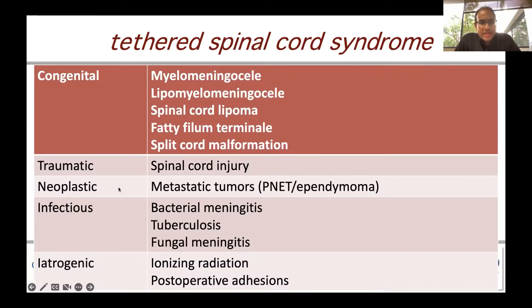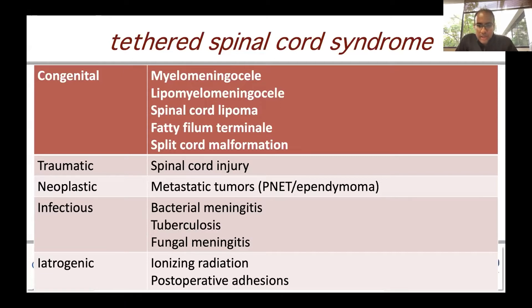Tethered spinal cord syndrome can occur in a congenital sense — in the setting of a myelomeningocele, a lipomyelomeningocele, a spinal cord lipoma, a fatty filum terminale, or a split cord.